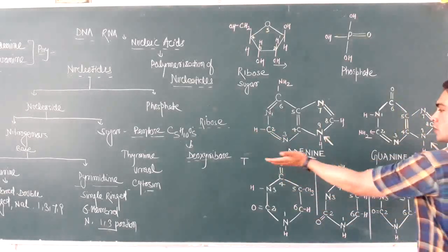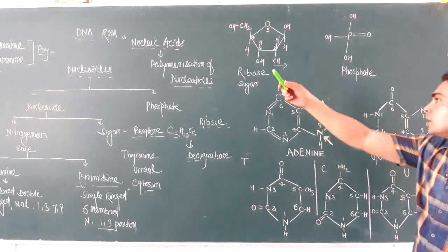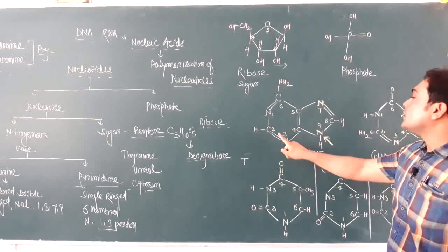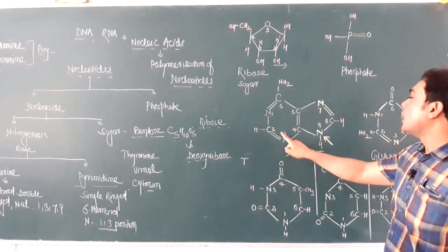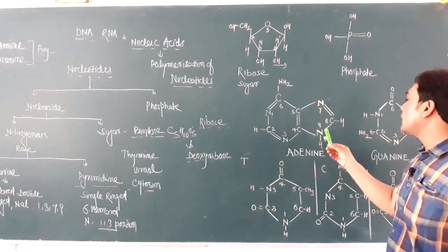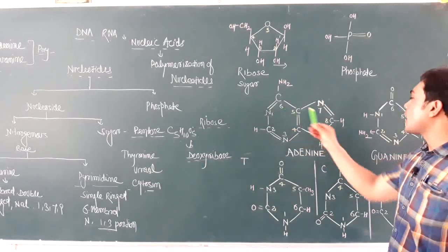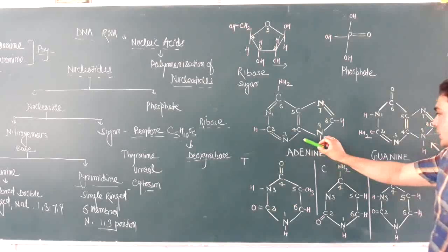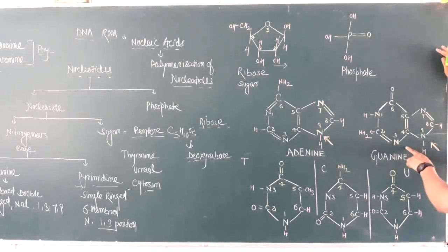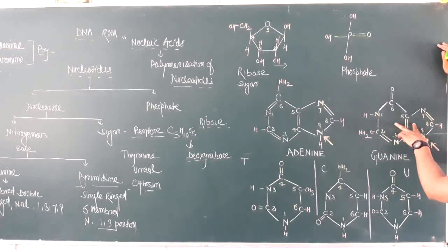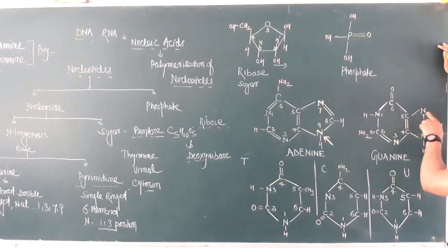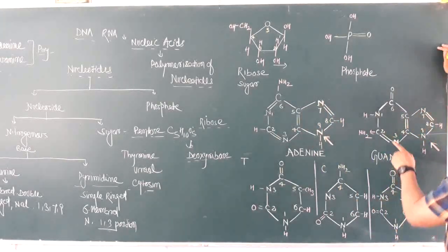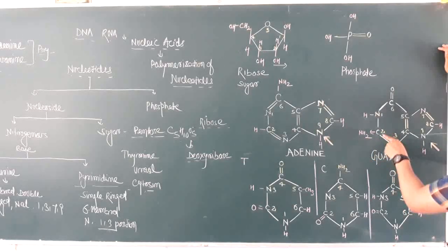Now we will discuss the various nitrogenous bases, starting with purines — adenine and guanine. In the structure of adenine, nitrogen is at the first, third, seventh, and ninth positions. They are double-ringed and nine-membered. In guanine, the same nine-membered double-ring arrangement applies, with nitrogen at the same positions, but the key difference is an amino group at carbon number two in guanine, whereas adenine has an amino group at the sixth position.